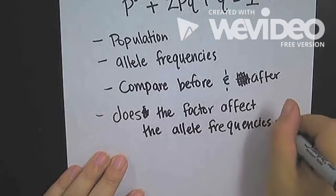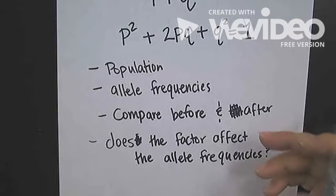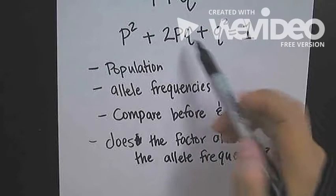We want to ask ourselves, does the factor affect the allele frequencies? If it does affect the allele frequencies, either the dominant or recessive frequencies, then we say that population is not in Hardy-Weinberg equilibrium. If that factor changes these numbers before and after, then they're not in equilibrium.